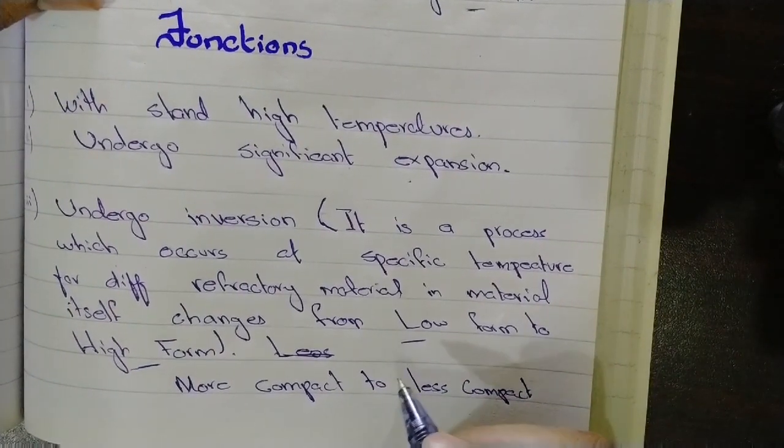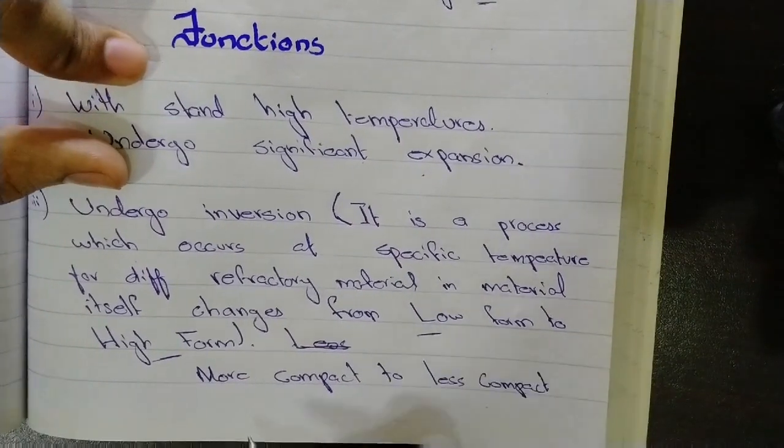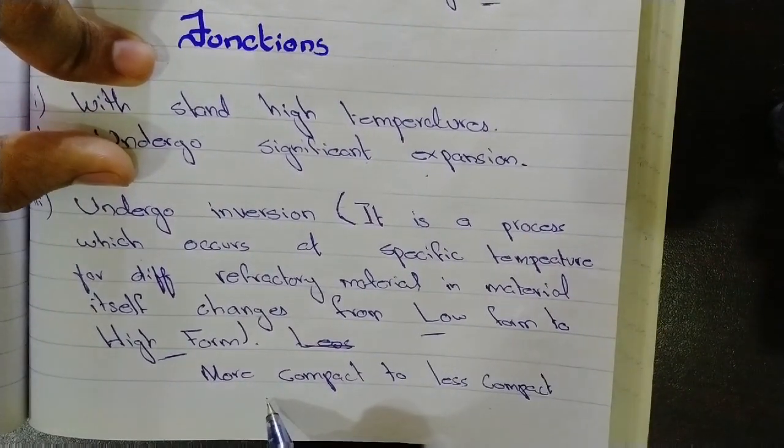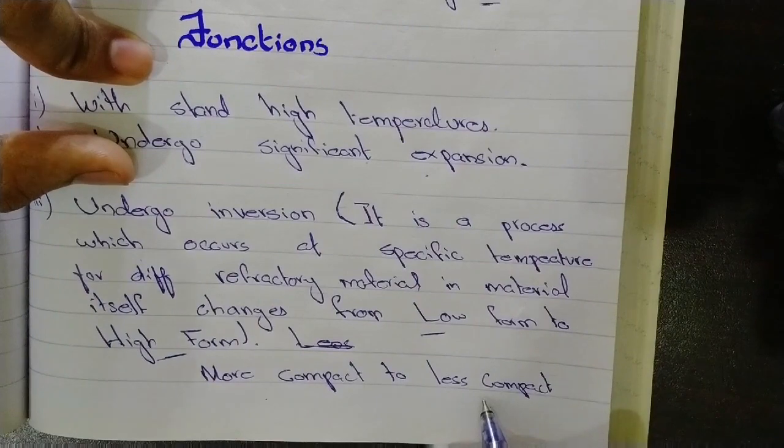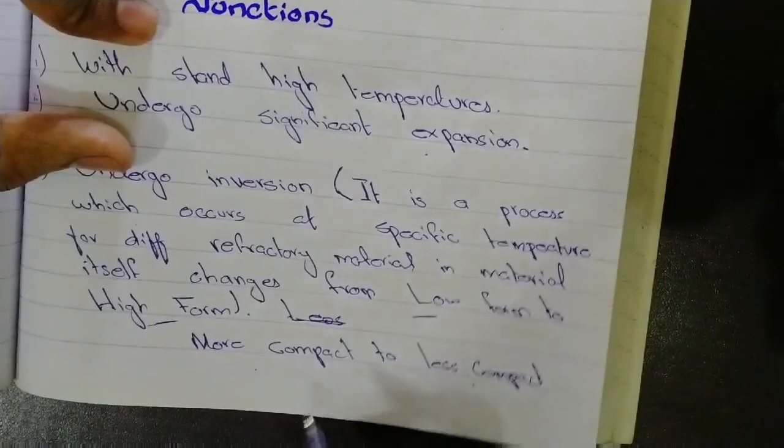What is the meaning of low form to high form? It means that the refractory material will convert from a more compact form to a less compact form, or we can say from a more dense form to less dense form.